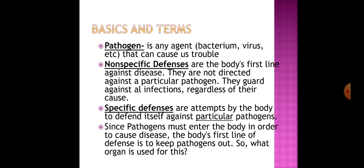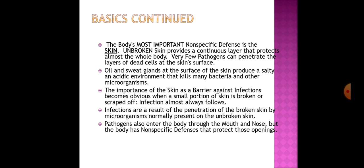The body's most important non-specific defense is skin. Unbroken skin provides a continuous layer that protects almost the entire body. Very few pathogens can penetrate the layers of dead cells at the skin surface. Oil and sweat glands produce a salty and acidic environment that kills many bacteria and other microorganisms. The importance of skin as a barrier becomes obvious when a small portion is broken or scraped off — infection almost always follows, resulting from penetration by microorganisms normally present on unbroken skin.